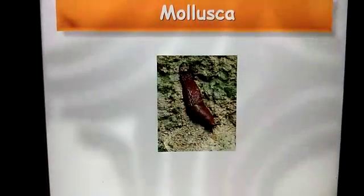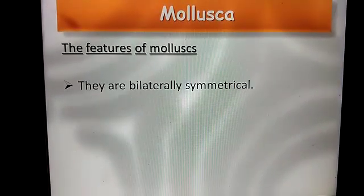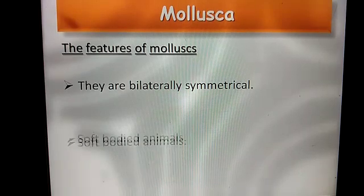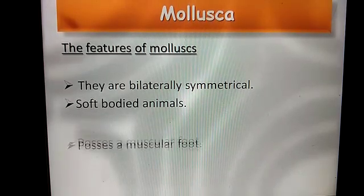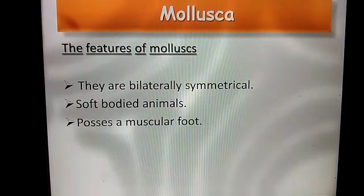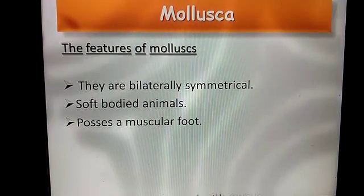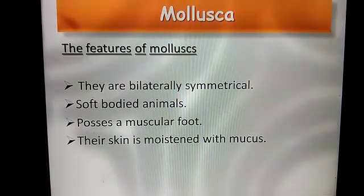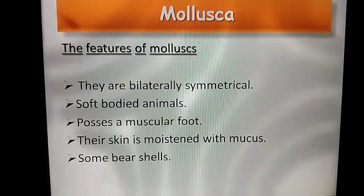Mollusca means soft-bodied animals, such as snails, octopus, and slugs. Let's discuss the features of Mollusca. They are bilaterally symmetrical. They are soft-bodied animals and possess a muscular foot — when we closely observe a snail, we can see their muscular foot. Their skin is moistened with mucus. Some wear shells and some do not.